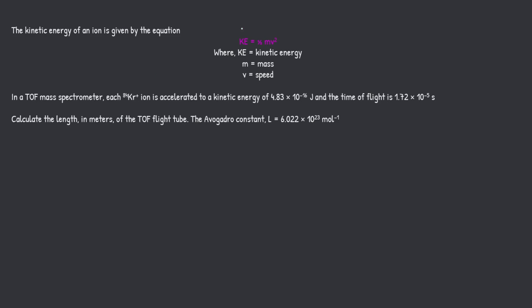So the kinetic energy of an ion is given by the following equation. This right here is always given to you, so don't stress about remembering it. What you do need to know is the units. So they've told us KE equals kinetic energy, M equals mass, and V equals speed or velocity.